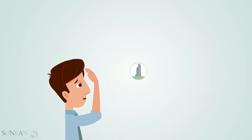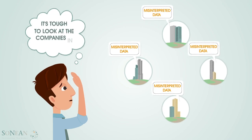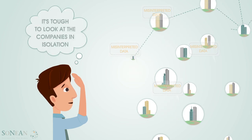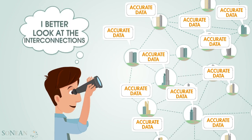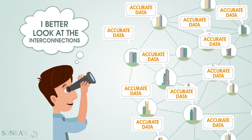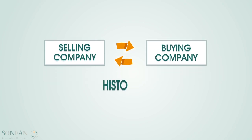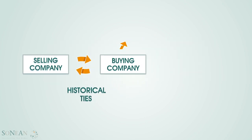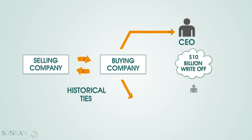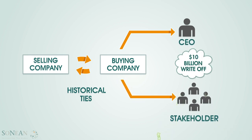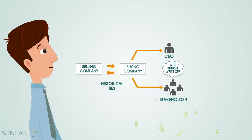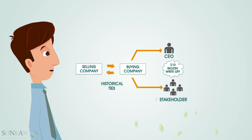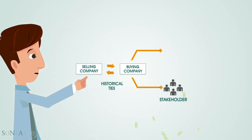As a far-sighted investor, you cannot look at companies in isolation. Investors of the future analyze the interconnections between different companies to identify risks and opportunities. This is especially true when mergers and acquisitions are in play. Recently, a $10 billion write-off leading to shareholder losses resulted from an acquisition that can be traced to historical social ties between the buying and selling company's executives. Investors with prior awareness of these social ties may have identified a risk or bias in this acquisition deal and taken steps to mitigate these losses.